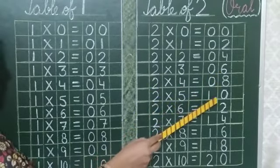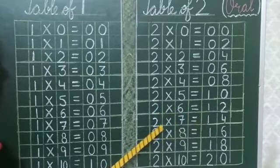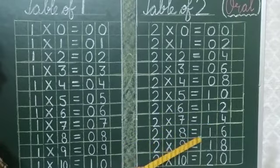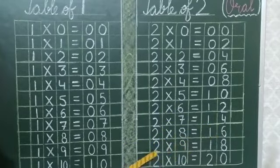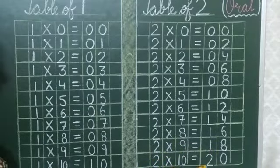2 5s are 10, 2 6s are 12, 2 7s are 14, 2 8s are 16, 2 9s are 18, 2 10s are 20.